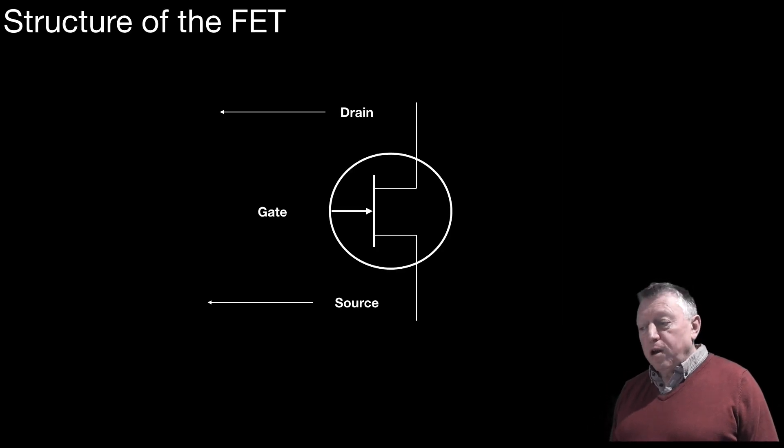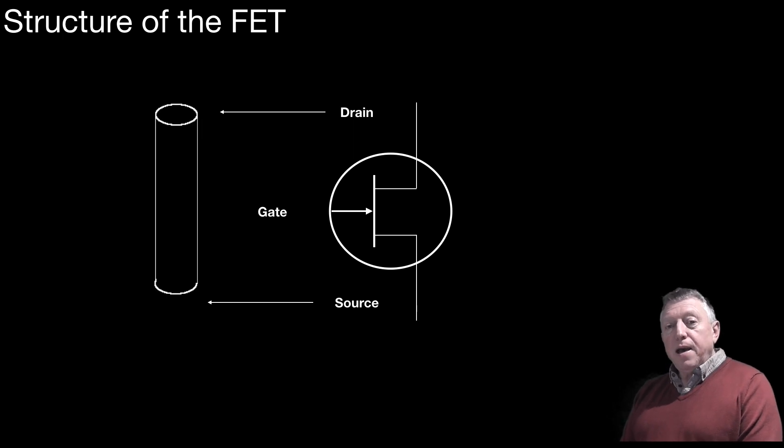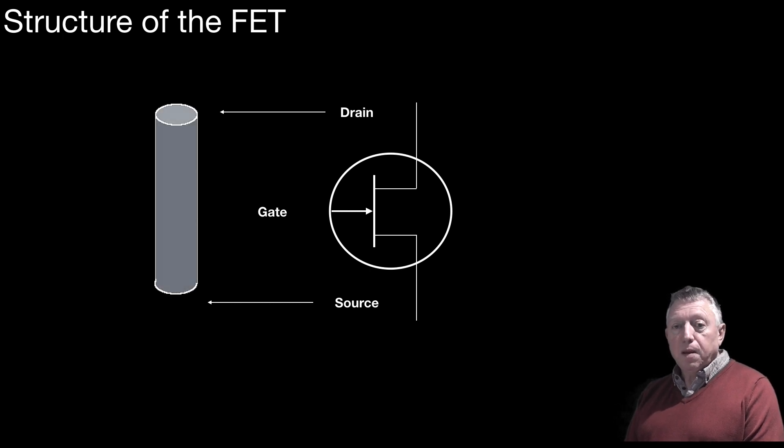So let's have a look at the symbol for an FET. The FET has a source, a gate and a drain. It's made up in this instance of a central core of N-type material and around that may be wrapped a very thin insulating layer which is now shown on your screen.